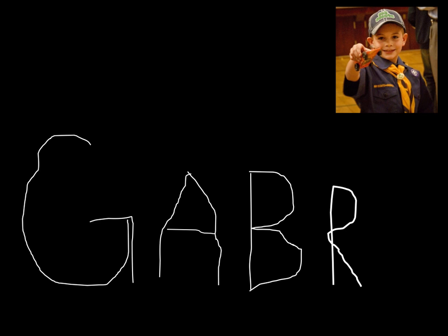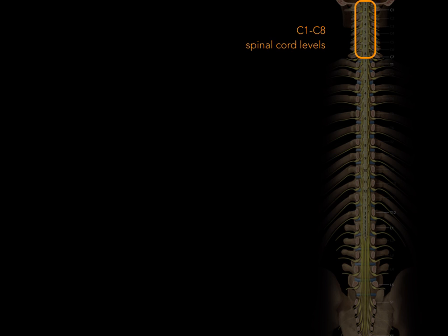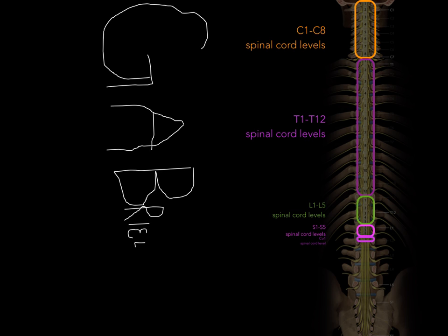Here's a picture of my son Gabe with his Pinewood Derby car. When he was little, he came home from school and said he could write his name. As he kept writing, he started running out of room, so the size of his letters got smaller. Similarly, in the vertebral column, we have eight cervical, 12 thoracic, five lumbar, five sacral, and one coccygeal spinal cord segments. Just like Gabe writing his name, cervical and thoracic levels are similar in size, but in the caudal region they get smaller and smaller.